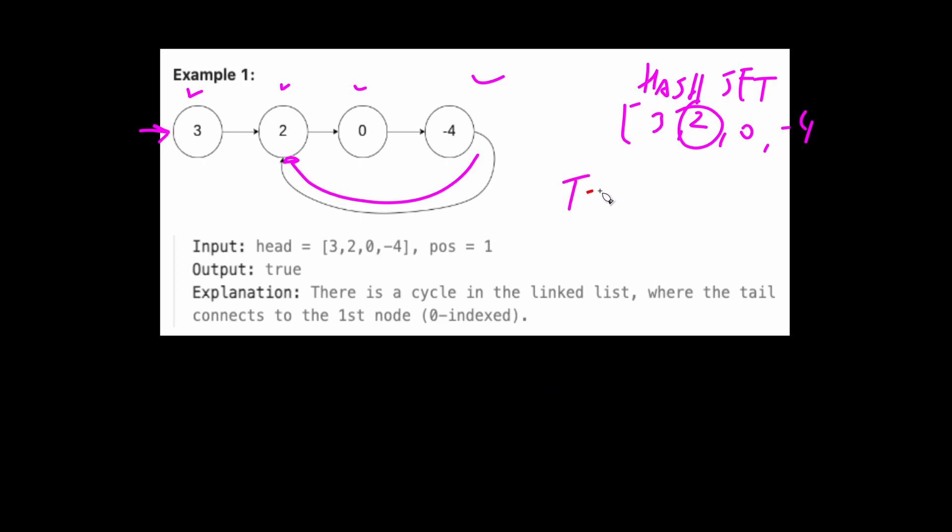The time complexity for this algorithm is big O of n and space complexity is big O of n as well because potentially we could have each node of the linked list stored in this hash set.